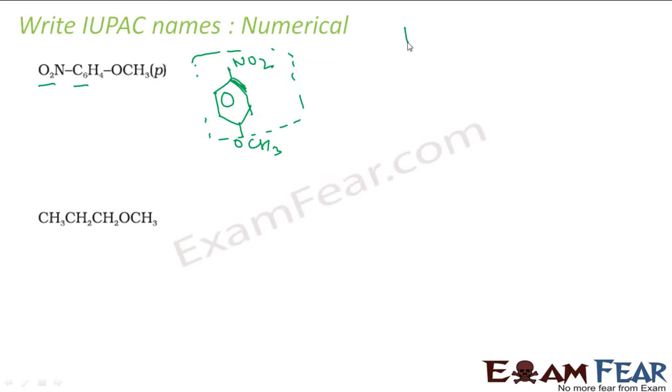In this primary part, I have OCH3 at the para position. There are many ways to name this. The whole OCH3-benzene structure is called anisole. On this anisole, at the fourth position, you have added a nitro group. So this becomes 4-nitroanisole. You can also call this 1-methoxy-4-nitrobenzene.